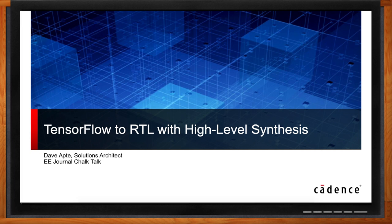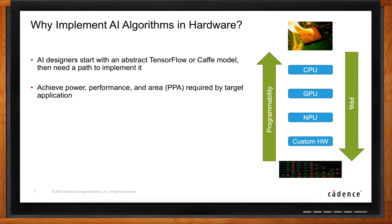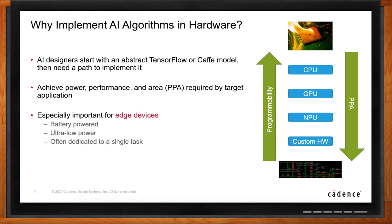Most of the product teams I talk to are integrating AI into their designs these days, and sometimes that means taking AI models all the way down to custom hardware. Dave, are you seeing that as well? Yes — most AI designs start with an abstract TensorFlow or Caffe model. Most of the time you might want to leave that as a CPU or GPU based software-only model, but sometimes you need the performance of custom hardware because that gives you the best performance per energy spent — especially for edge devices like battery-powered sensors dedicated to a single task that still need to run an AI network.